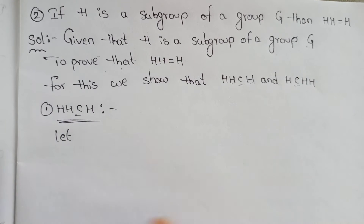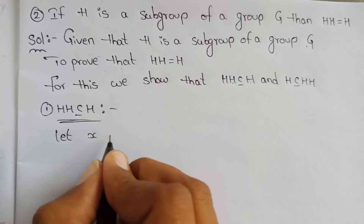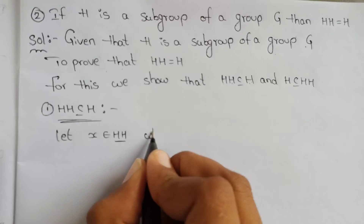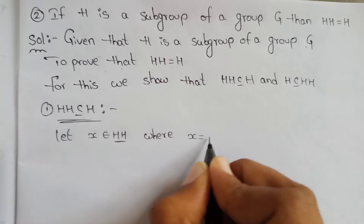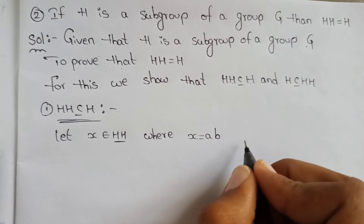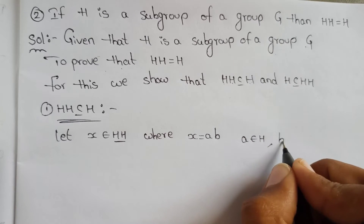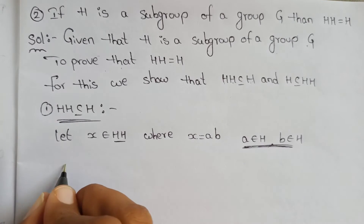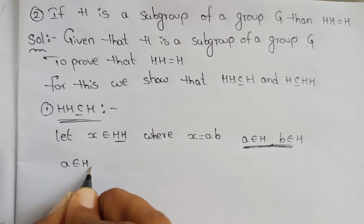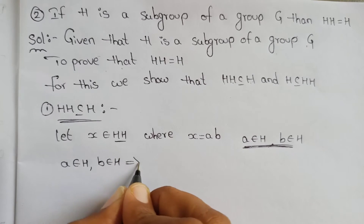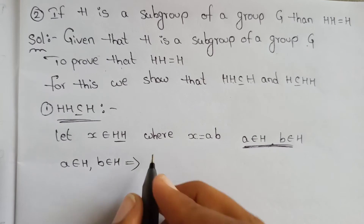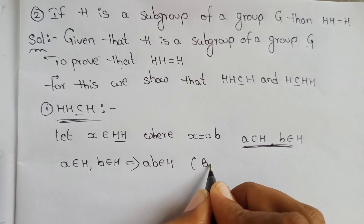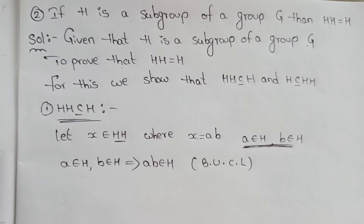Let X be an element of H·H. Here we have two elements of H: let A belong to H and B belong to H, so that X equals A·B. We need to prove that X belongs to H. Since A and B both belong to H, by the closure law, A·B belongs to H.